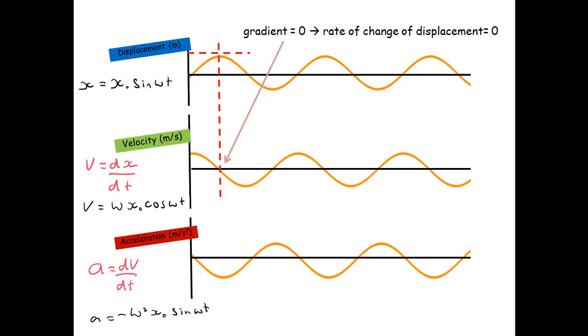We're going to look at some of the things what's going on with the graphs. So at this point here the gradient of the displacement graph is zero. So the rate of change of displacement is zero. And the rate of change of displacement is velocity. So you can see at this point, the graph of velocity actually cuts through zero.